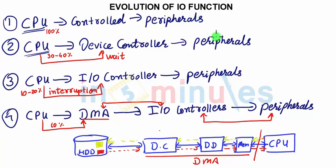After understanding the evolution of IO functionality, we concluded that DMA is the next thing we are talking about.